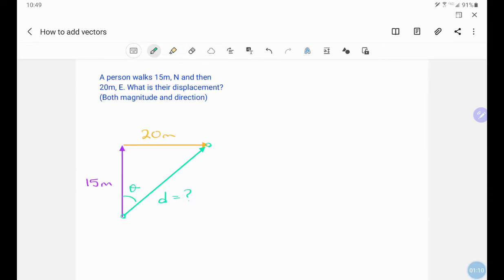First of all, we have a right triangle here. We know two sides and we need hypotenuse. So that should scream at us, Pythagorean theorem. So we have d squared equals 15 squared plus 20 squared. So d is going to be the square root of 15 squared plus 20 squared. So the displacement here is going to be 25 meters.